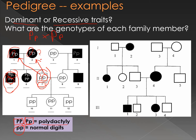Here are the rest of the genotypes. Is individual number four's genotype a certainty? Yes — because individual eight is homozygous recessive, we know one allele came from each parent. The little p came from mom, the little p came from dad, who must therefore be heterozygous. They must be heterozygous because they have polydactyly, which means they have at least one dominant allele.